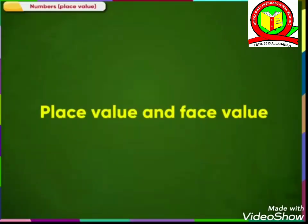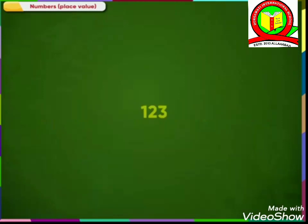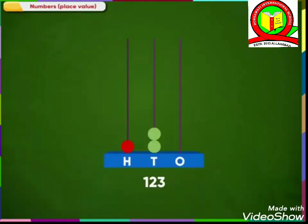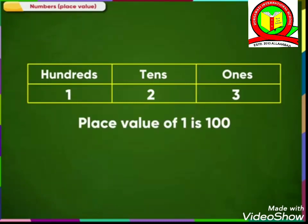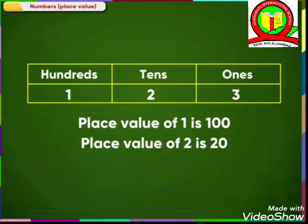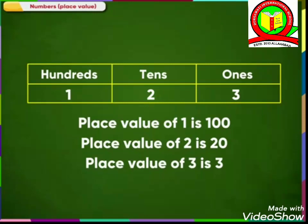Place value and face value. Let us find the place value of each of the digits of the number 123. We represent this number in an abacus. We can also place this number in a place value chart. From both these, we know that the place value of the digit 1 is 100. The place value of the digit 2 is 2 tens, that is 20. The place value of the digit 3 is 3.